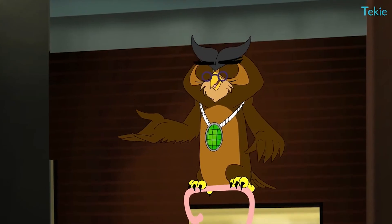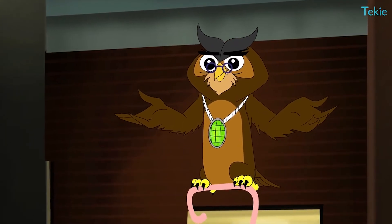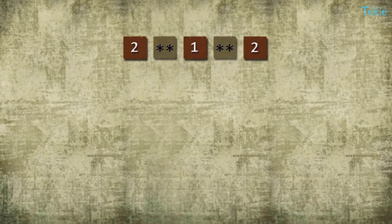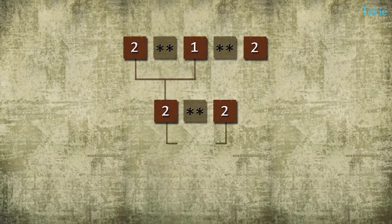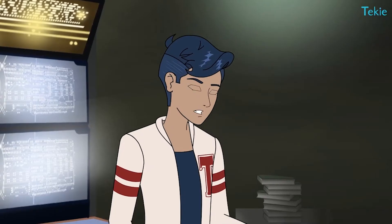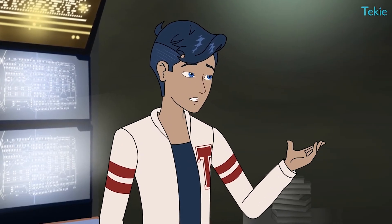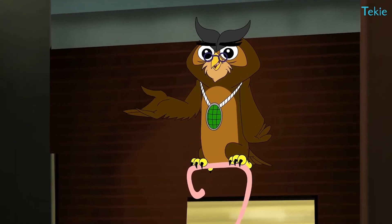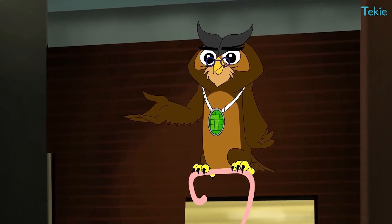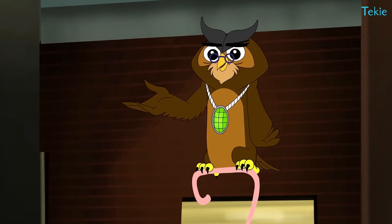Looks like you solved it from left to right. First, two to the power one is equal to two, then two to the power two is equal to four. Absolutely, and that is how it's done, right? Yes it is — except for exponents.